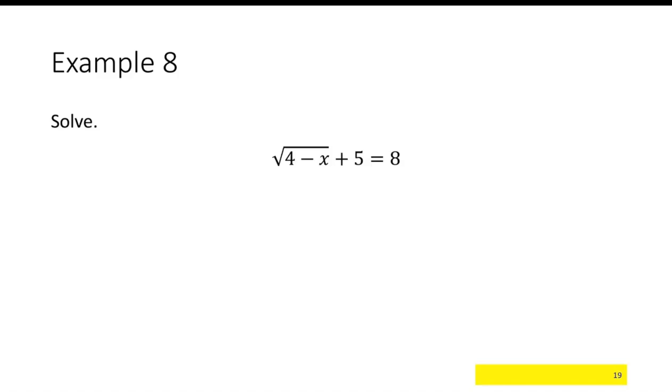When it's a little bit more complicated like this, we need the square root by itself. So don't square right away. What you want to do instead is subtract this 5 first, so the square root of 4 minus x is equal to 3. Then we can square both sides and we'll have 4 minus x is equal to 9. We can subtract 4, so negative x is equal to positive 5, and x is equal to negative 5.